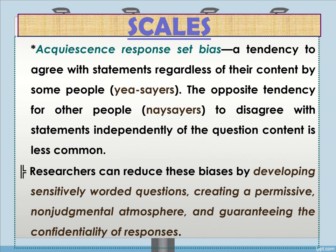Researchers can reduce these biases by developing sensitively worded questions — using both positive and negatively worded items — being objective in wording, creating a permissive non-judgmental atmosphere, and guaranteeing the confidentiality of responses. We must also remind participants that there are no right or wrong answers, and that they should answer based on what they truly feel, perceive, or know.